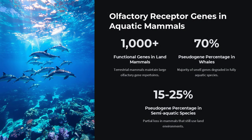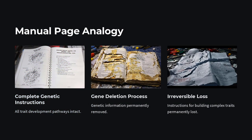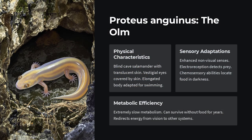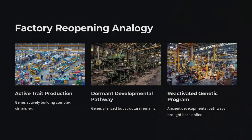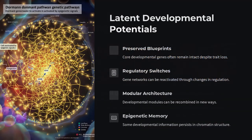Over generations, entire developmental pathways can be pruned — eyes degenerate, limbs recede, and sensory organs regress — streamlining the organism for its new niche. Yet even this energy-saving logic conceals deeper complexities. Genetic and developmental pathways are highly interconnected, so mutations knocking out one structure can ripple through networks, producing unexpected side effects or novel adaptations.